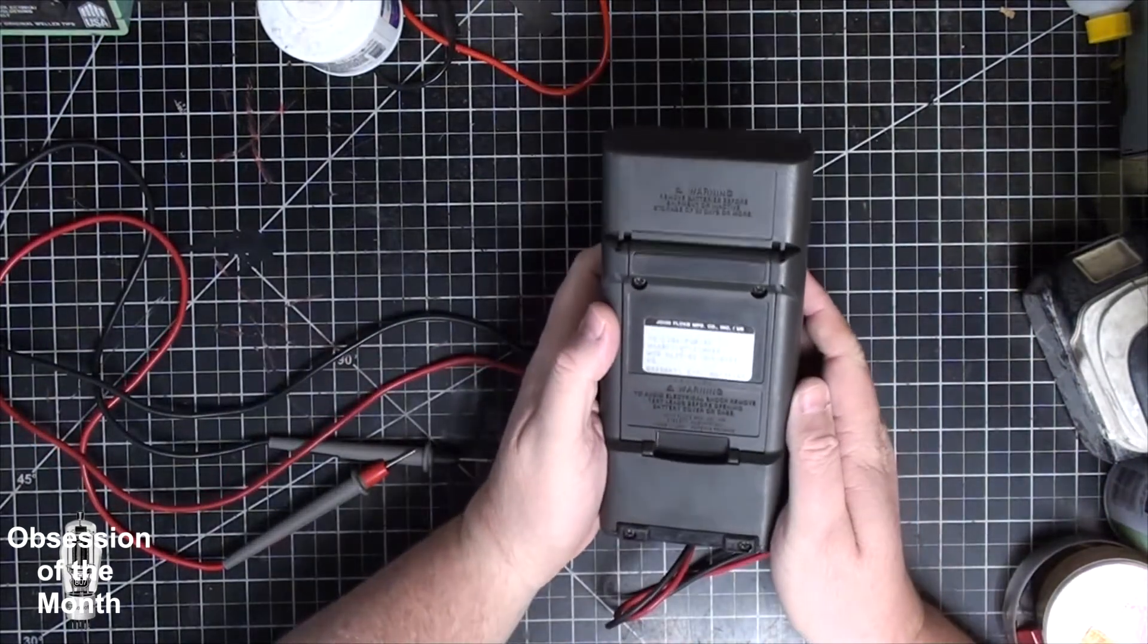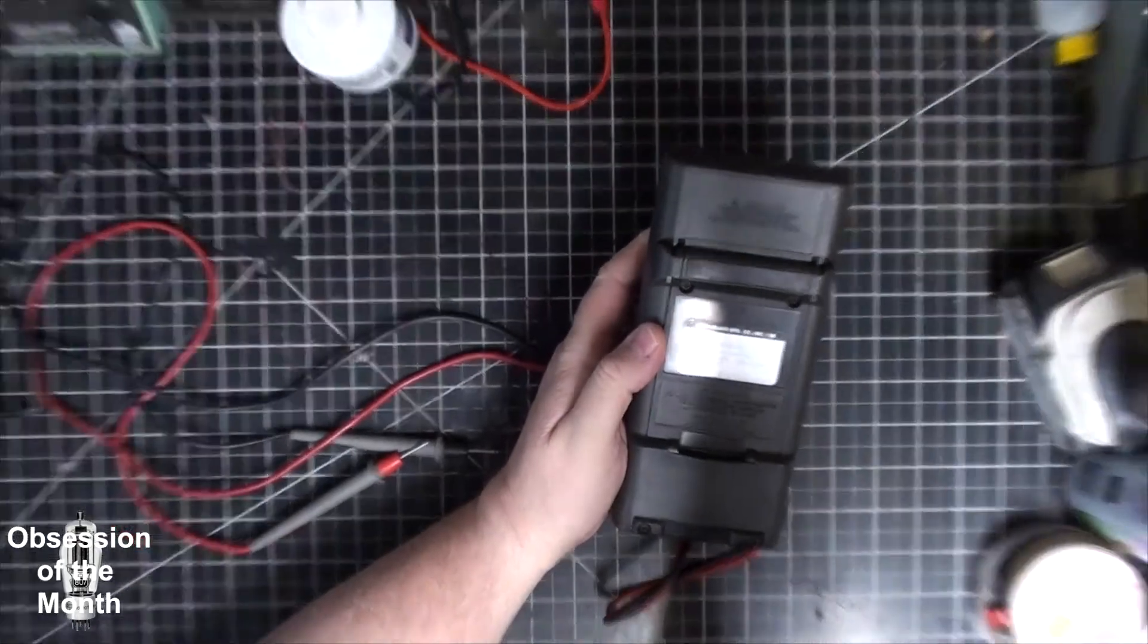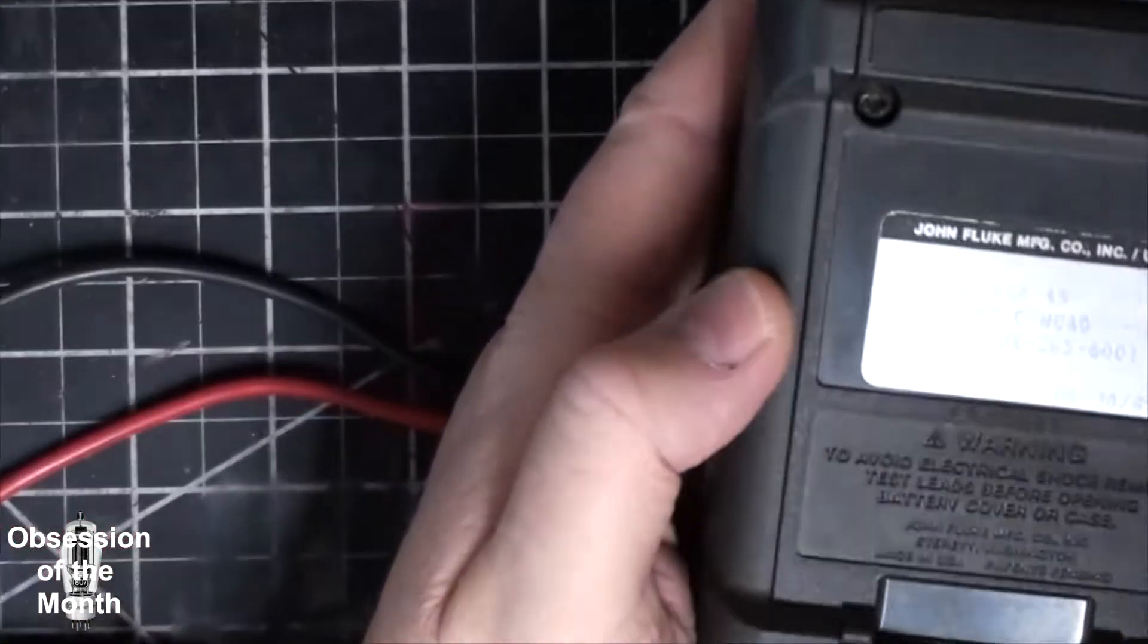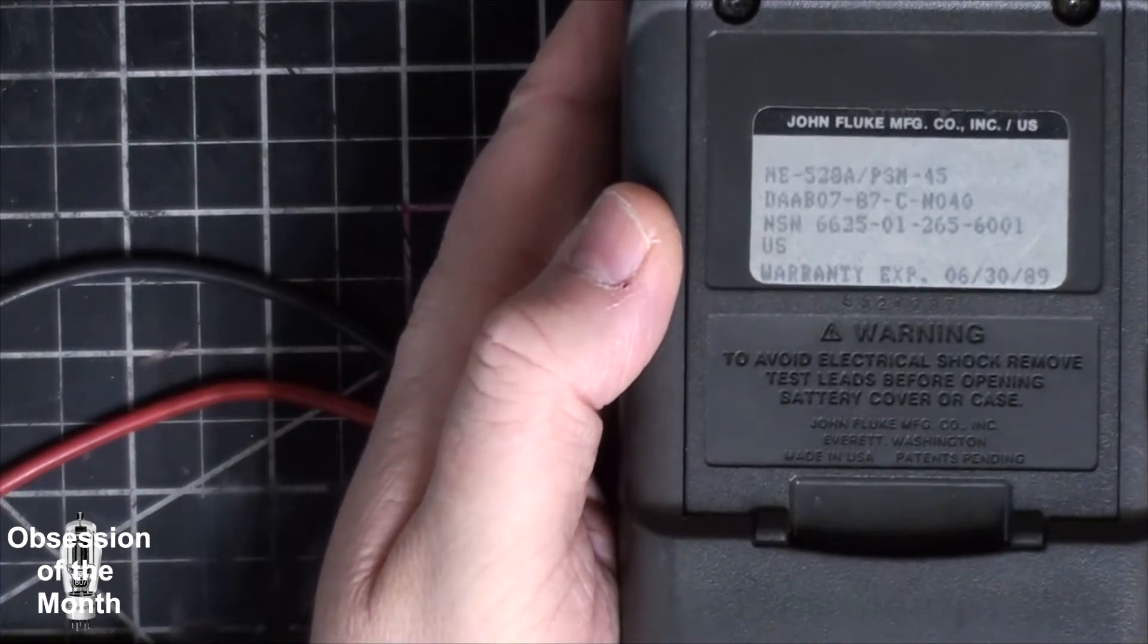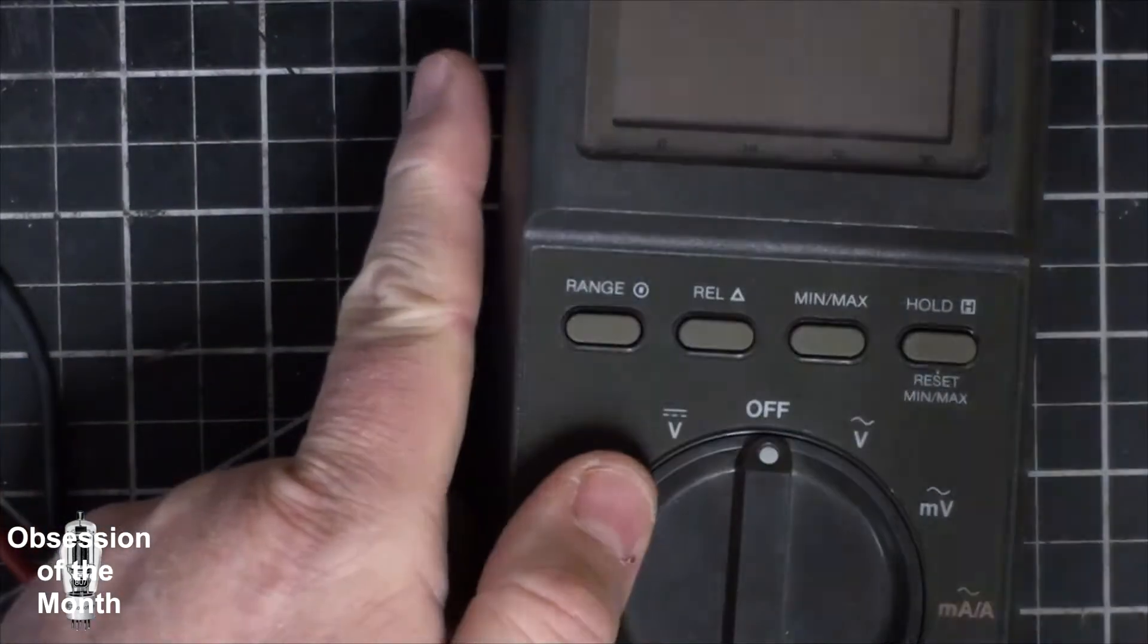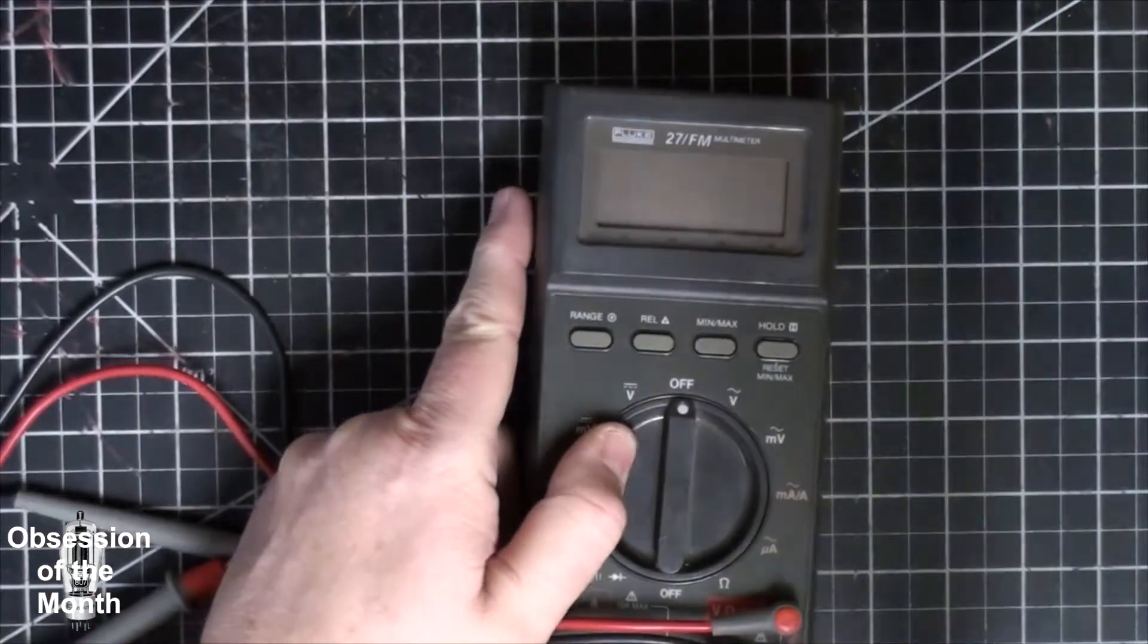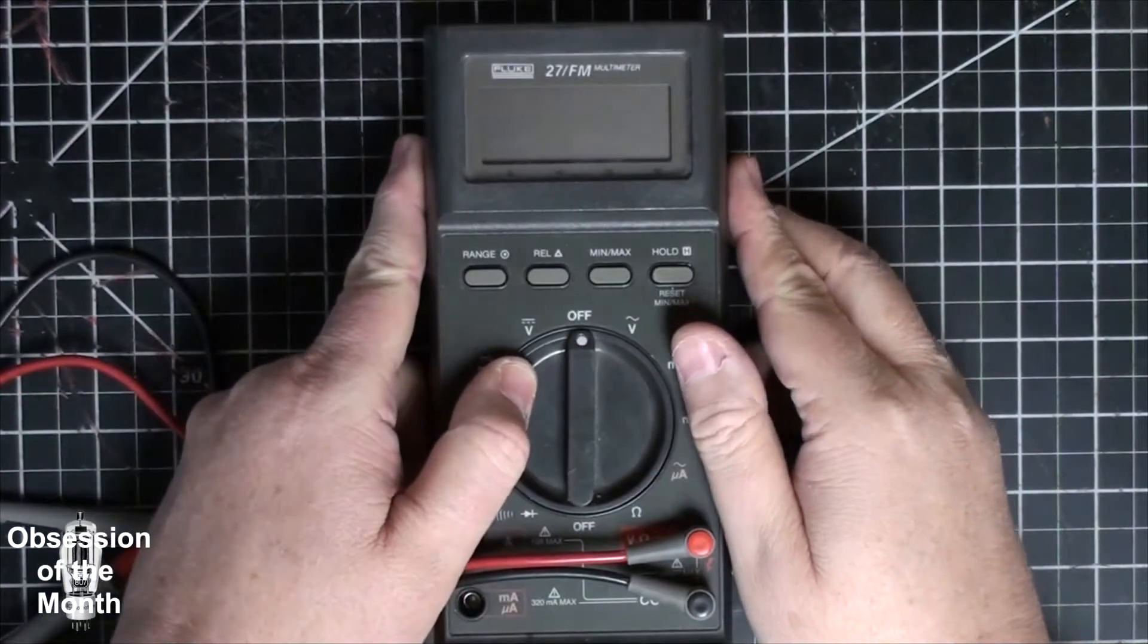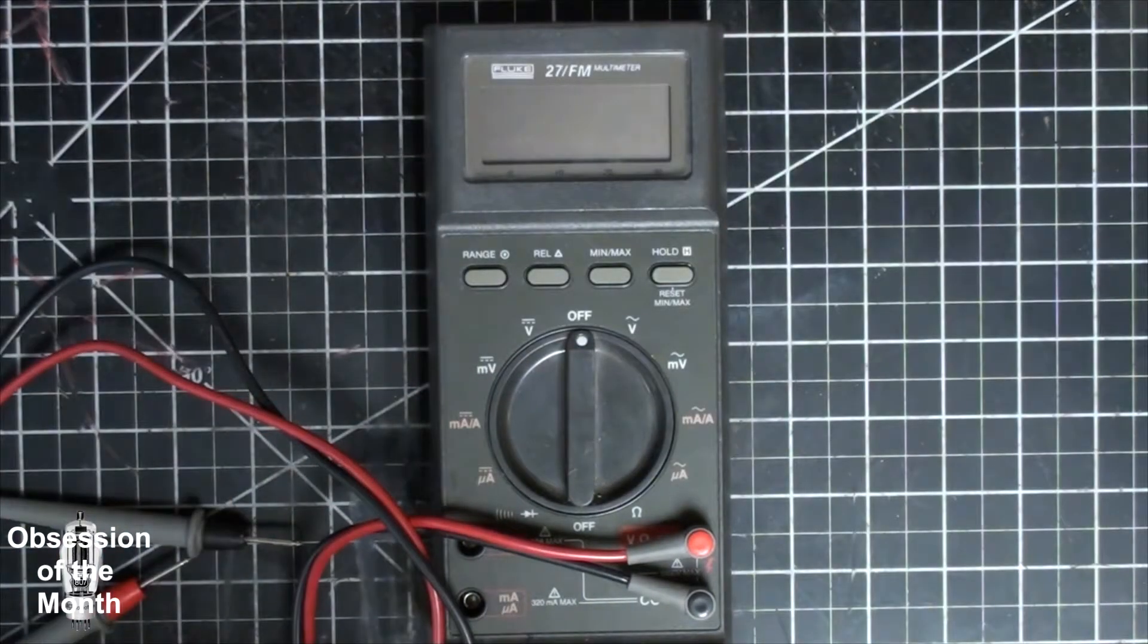On the back here you can see that the warranty expired in 1989. I'm kind of doing this video because, for as old as it is, this is a very good digital multimeter.